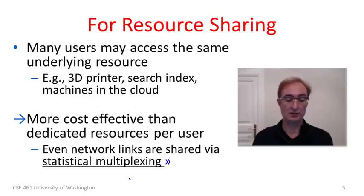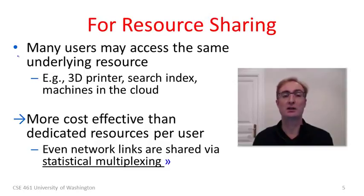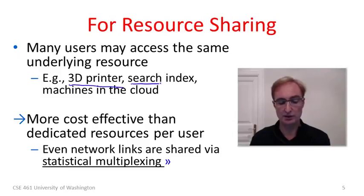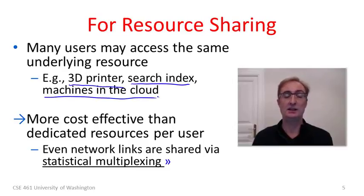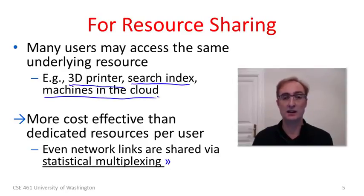The second key reason for building networks is resource sharing. A network allows many different users to access the same underlying resource. That resource could be pretty much anything — the latest 3D printer, a search index that's been built up, or different machines and computers in the cloud performing computations. The key idea is that it's more cost effective to have many users share one underlying resource than to have a dedicated resource for every user.